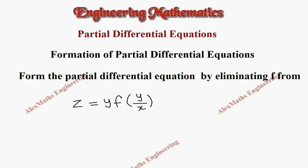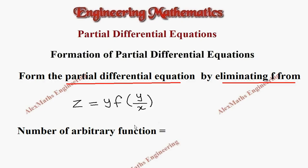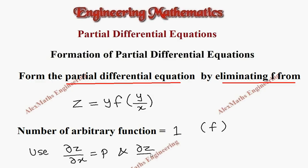Hi students, this is Alex. In this video we are going to form the partial differential equation by eliminating the arbitrary function f in the given equation. The number of arbitrary functions present is 1, that is f. So we are going to use only the first order partial derivatives: dou z by dou x, named as p, and dou z by dou y, named as q, to eliminate the arbitrary function.